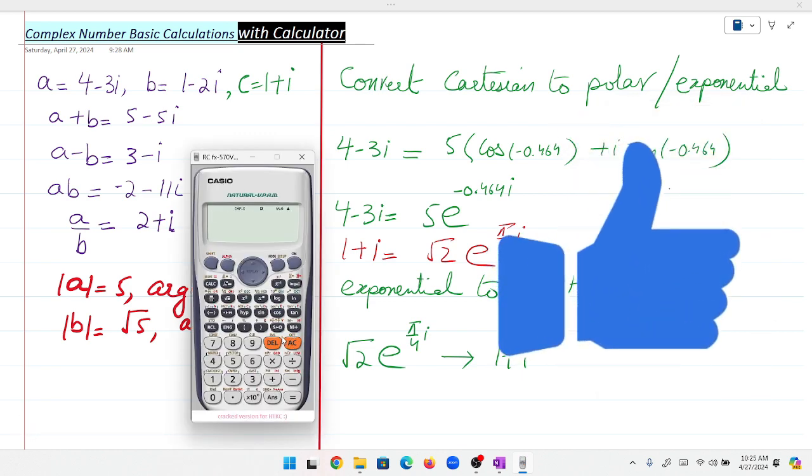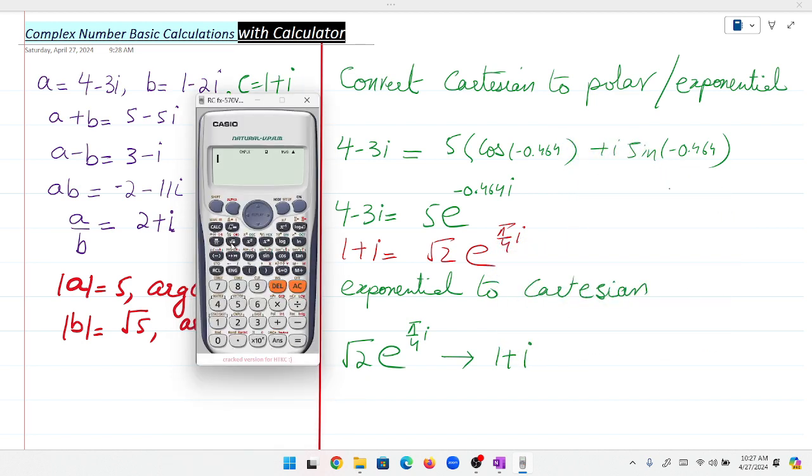We can also convert exponential or polar form back to Cartesian. Enter √2, then the angle symbol (Shift minus), then the argument π/4. This converts polar or exponential form to Cartesian form.